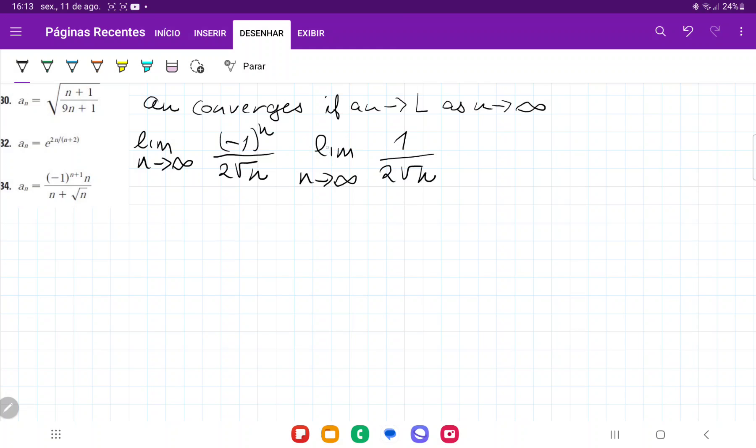When we have 1 over 2 square root of n and n tends to infinity, it's like dividing by a very large number. 1 divided by an infinitely large number gives us 0. So if 1 over 2√n as n tends to infinity gives us 0,